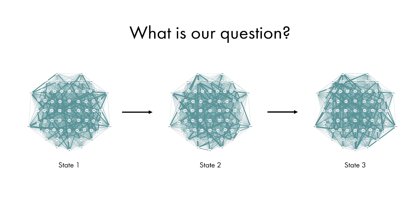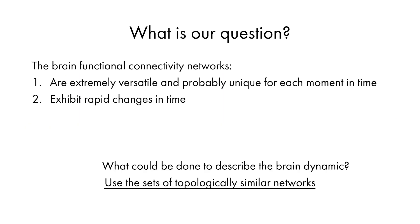The pairwise synchronization matrix between different areas is interpreted as a graph and analyzed using graph theory. Brain dynamics are quite often studied using the averaging of matrices over time, but brain networks are extremely versatile and quick-changing. With the averaging procedure, some important information could be lost. Thus, we think it is more important to describe the complex dynamics of brain networks with sets of topologically similar networks.